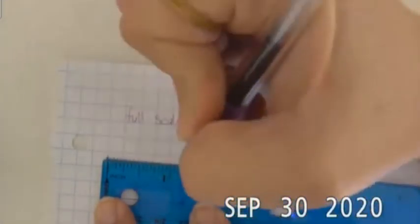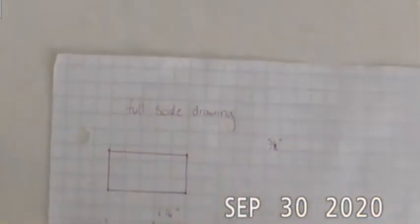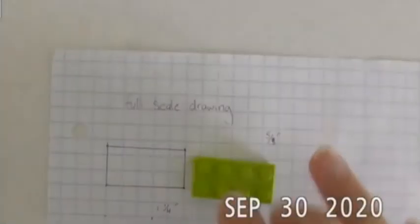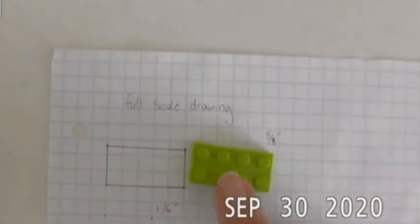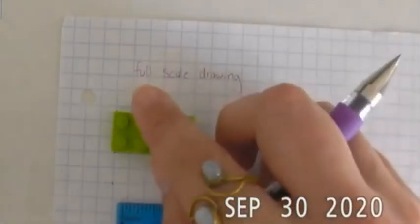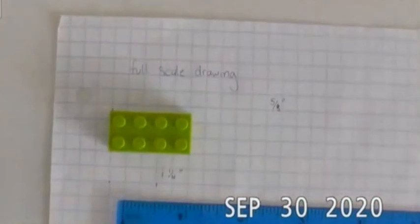Again, like we said, it's not going to line up perfectly with the lines on my graph paper, but it should more or less be a rectangle. And since it is a full scale drawing, it is the exact same size as my real life Lego. So I can line those up, exact same size.